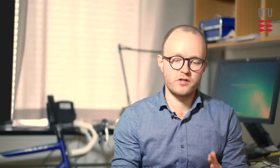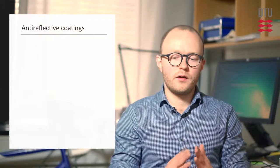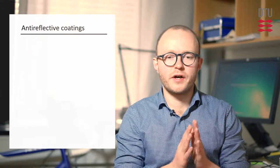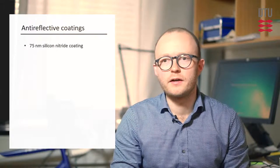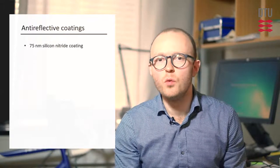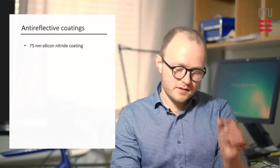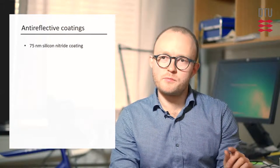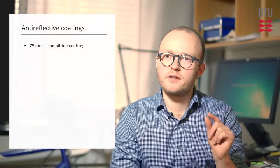The second measure that we do to reduce the reflection is an anti-reflective coating. And that works in a different way. It typically consists of a 75 nanometer silicon nitride coating deposited by PECVD, which is plasma-enhanced chemical vapor deposition. And this silicon nitride is basically optimized in terms of its refractive index.